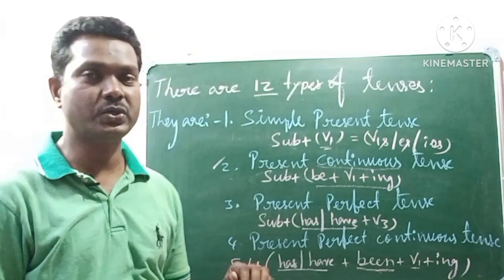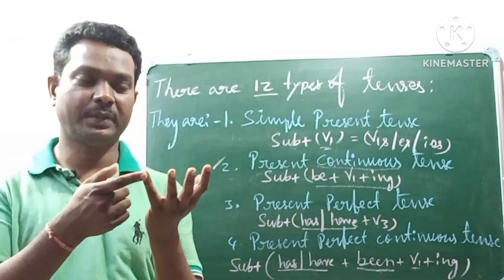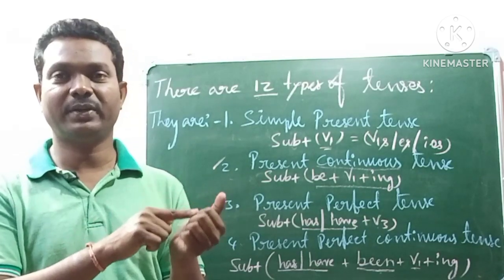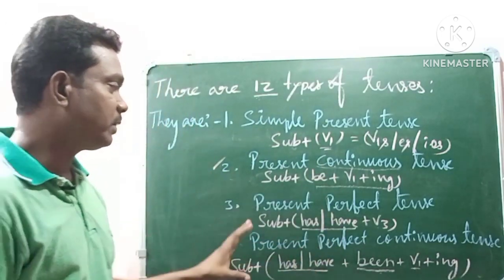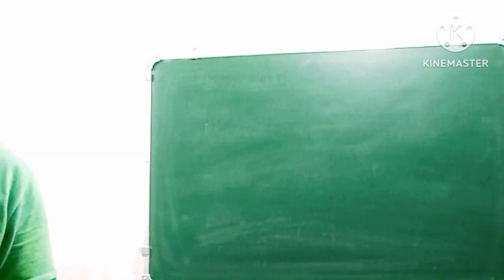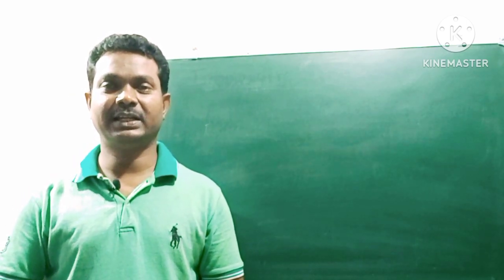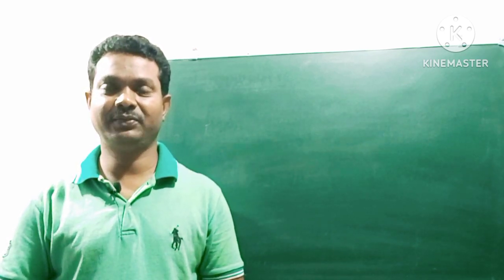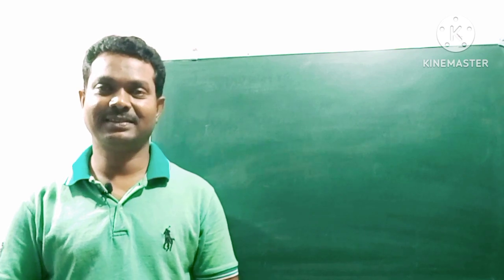So I recommend you form all these tenses by practicing them. In present tense there are four kinds: simple present tense, present continuous tense, present perfect tense, and present perfect continuous tense. In the next class we will cover past tense with examples. I hope you understand this class. If you like it, please press the like button, subscribe, and share it with your friends. Thank you.